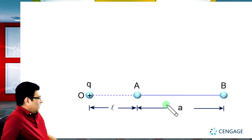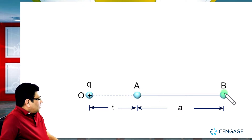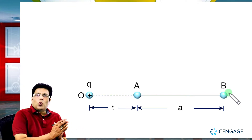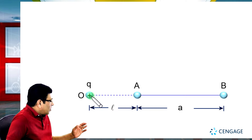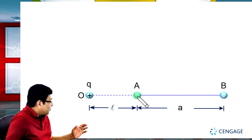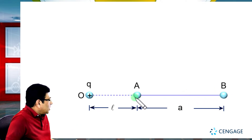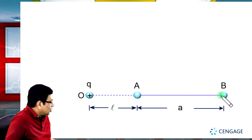Now let us analyze this situation. Sphere A and Sphere B initially have no charge. The point charge will create an electric field, and sphere A as well as sphere B will experience the electric field of this charge. The direction of the electric field is from left to right. Since these are metallic spheres, free electrons will move opposite to the electric field.